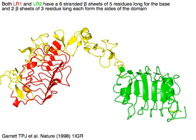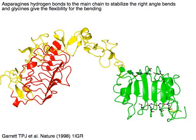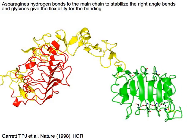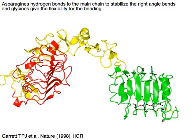Prolines form hydrogen bonds with the main chain to stabilize the bends, while glycines give flexibility to the bends.